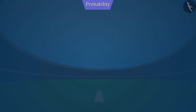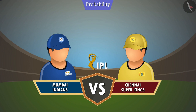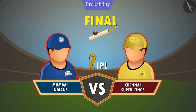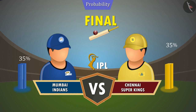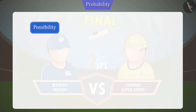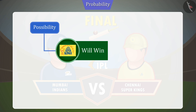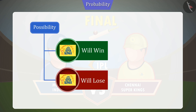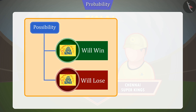In the previous video, we saw an example where both Chennai Super Kings and Mumbai Indians teams are going to play the final match of IPL. According to Raju, the team Chennai Super Kings are more likely to win. There are two possibilities at the completion of the match: first, Chennai Super Kings will win; second, Chennai Super Kings will lose.